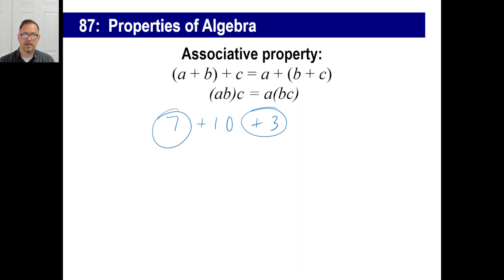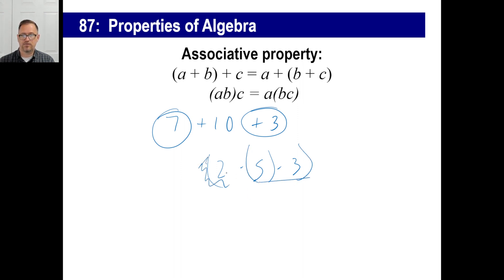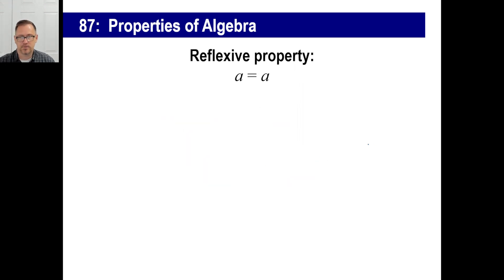So if you had something like 2 times 5 times 3, the answer going left to right is 10 times 3, which is 30. But you could also go 5 times 3 is 15, times 2, that's 30 as well. It doesn't matter what order you do these things.